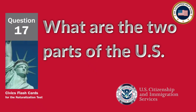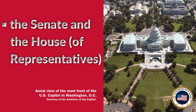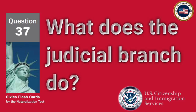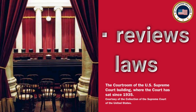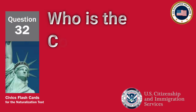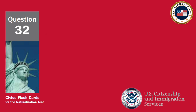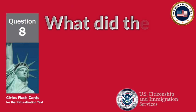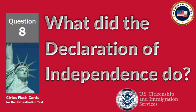What are the two parts of the U.S. Congress? The Senate and the House of Representatives. What does the judicial branch do? Reviews laws. Who is the commander-in-chief of the military? The President.